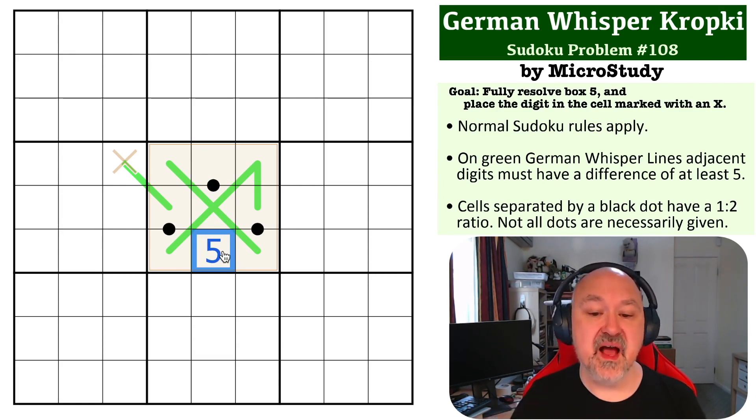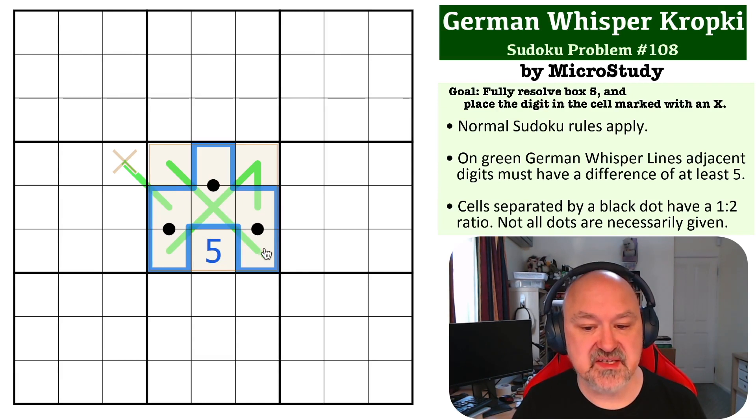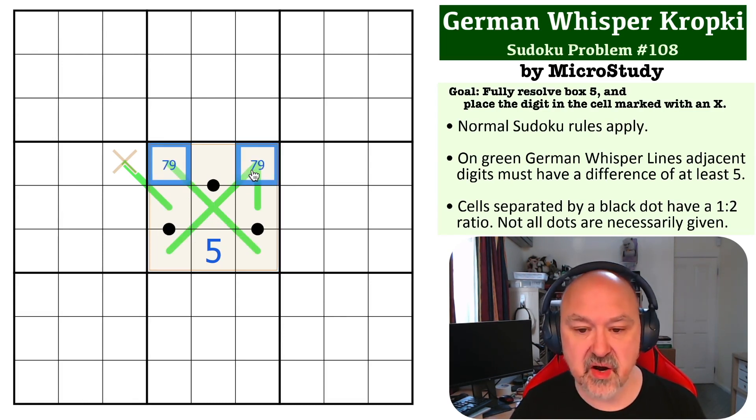Now, the other important digits that can never go on the black dots, so can never go on these cells, is you can never put 7 and 9 on ratio dots because of the same issue. Half of 7 is 3.5, half of 9 is 4.5, and if you double them, you go over 10. So you can never put 7 or 9 into those cells. So these become 7 and 9, which means those are high digits.